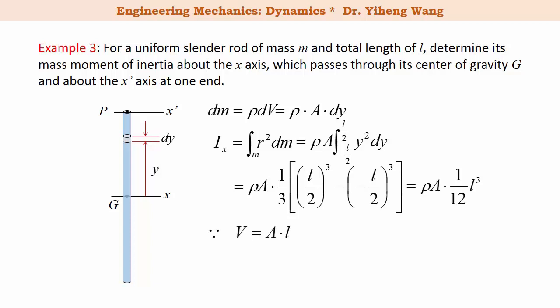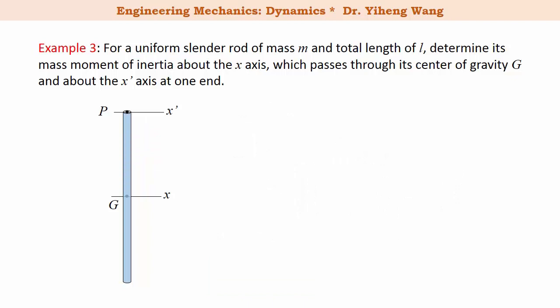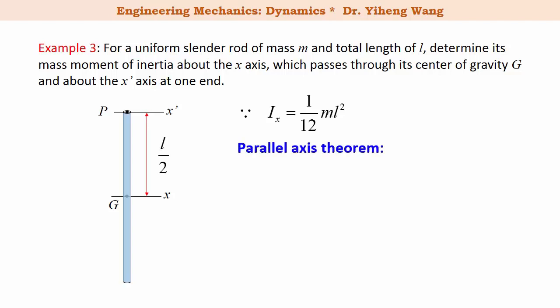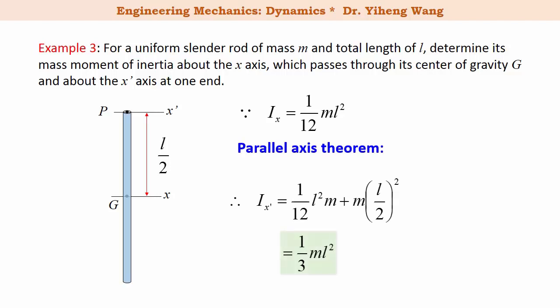For the entire slender rod, its volume equals cross-sectional area A times its length L, and its mass equals density times volume. Substituting this into our expression for I_x, we find that I_x equals one-twelfth times M times L², where L is the total length of the rod. This is another very useful conclusion. For the second part, since the x and x-prime axes are parallel with a perpendicular distance of L/2, we apply the parallel axis theorem to determine that I_x-prime equals one-third M L².